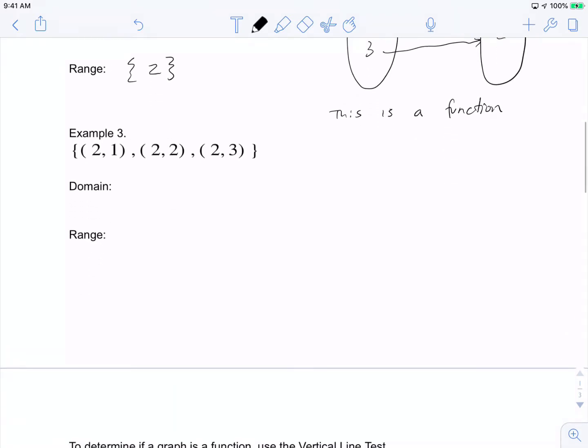Let's look at one more example. The domain here is going to be {2} because the x values are all 2. The y values for the range are going to be 1, 2, and 3.